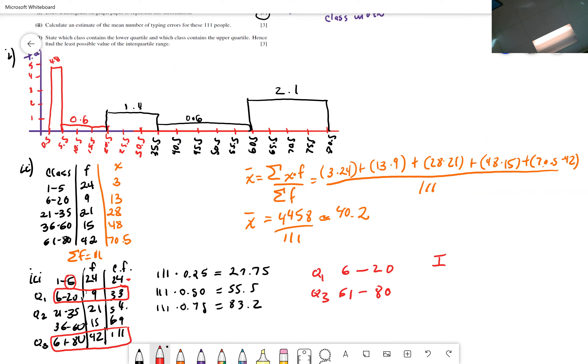The question specifically asked for the least possible values of the interquartile range. For the first quartile, it could be between 6 through 20, any one of those numbers. And for the third quartile, it could be between 61 and 80. The interquartile range is quartile 3 minus quartile 1. Maybe it was 80 minus 20. Maybe it was 80 minus 6. Maybe it was 61 minus 20. Maybe it was 61 minus 6.